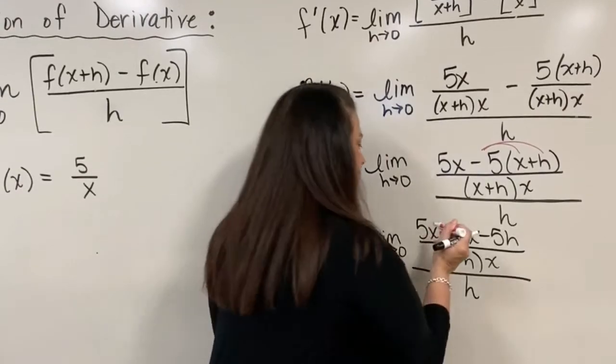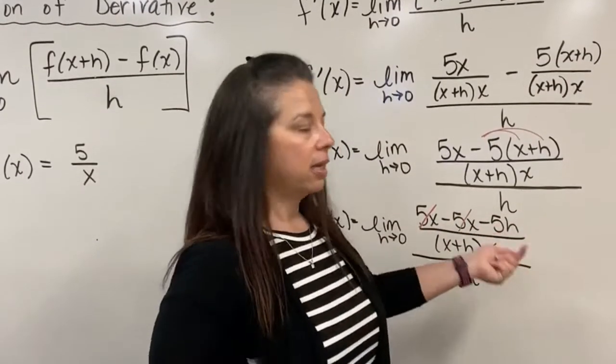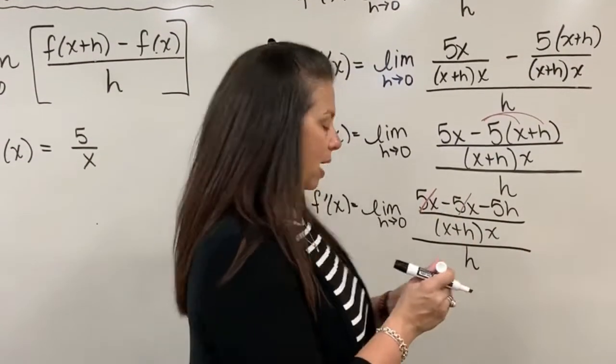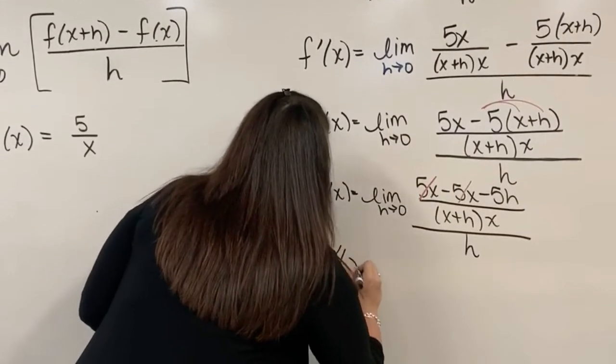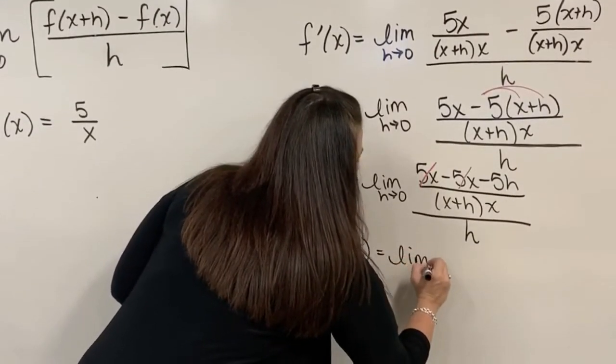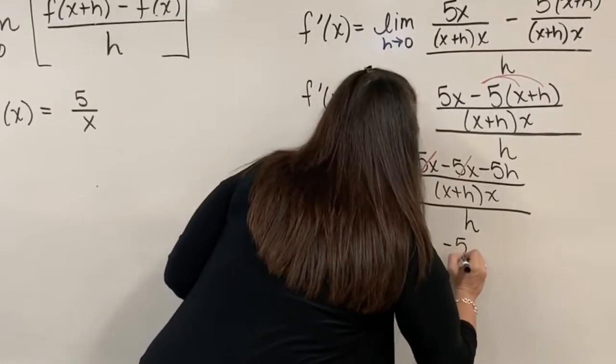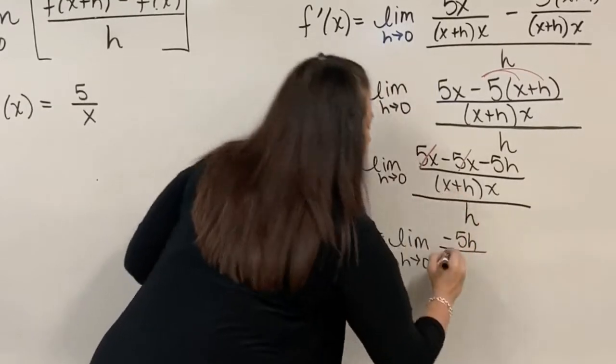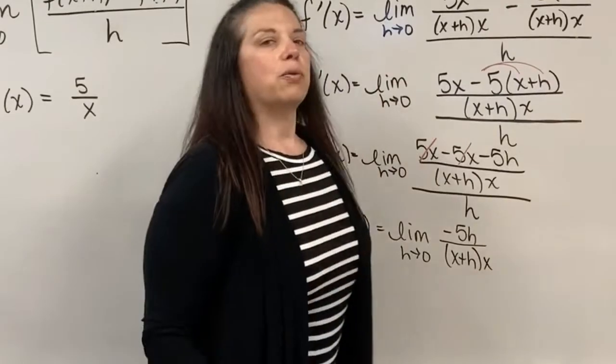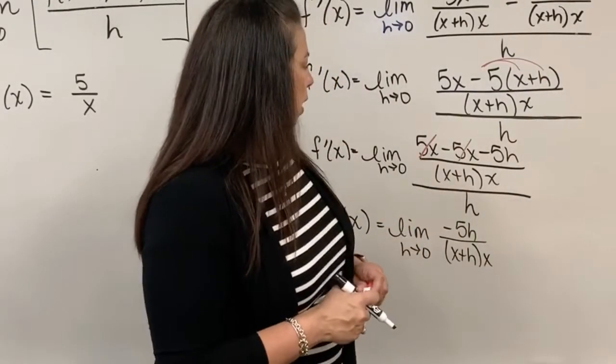So far so good. I hope you notice that in this case, I have a 5x minus 5x that subtracts off. Now what's left is just minus 5h in the numerator. I have now at this point f prime of x is equal to the limit as h approaches 0 of minus 5h divided by x plus h times x. And now right here, I'm going to do a wonderful step where I realize the whole time we were dividing by h, there's another way to handle that.